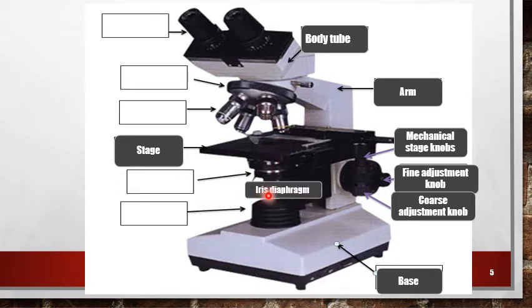Iris diaphragm is located beneath the stage and controls the amount of light which enters the condenser lens.